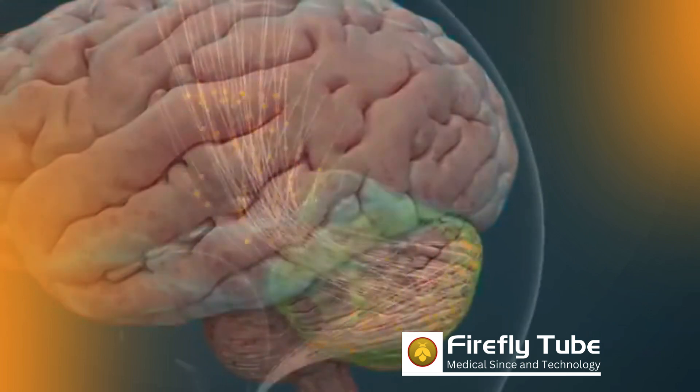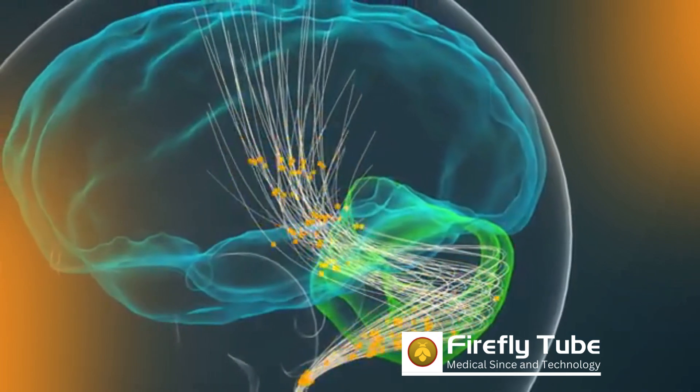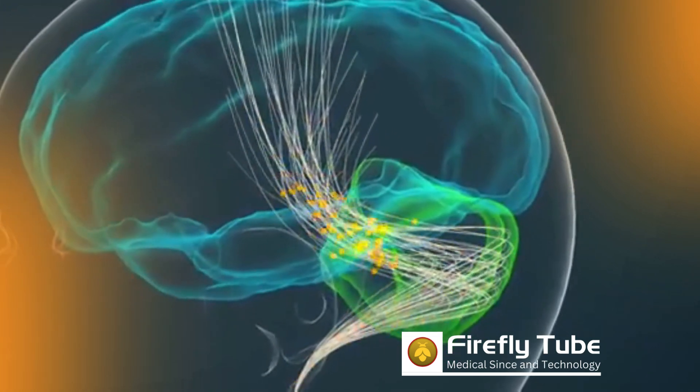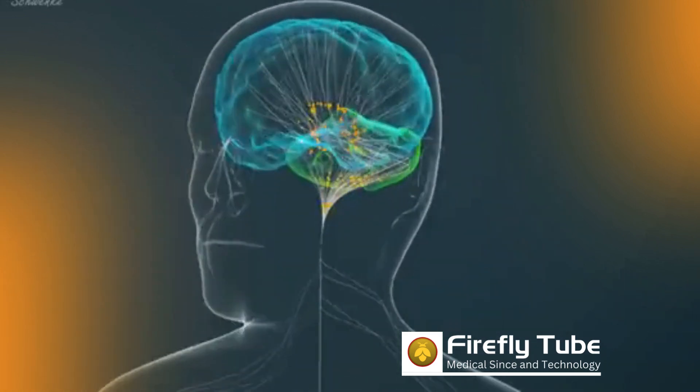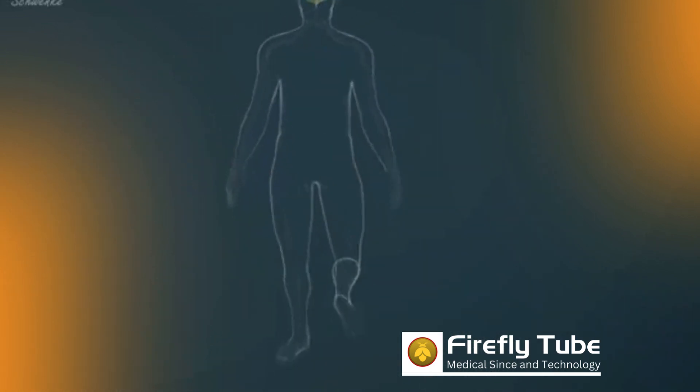With the help of its nerve cells, the cerebellum is able to transform planned movement patterns of the cerebrum into coordinated movement sequences. Without the cerebellum, harmonious movements such as walking would not be possible.